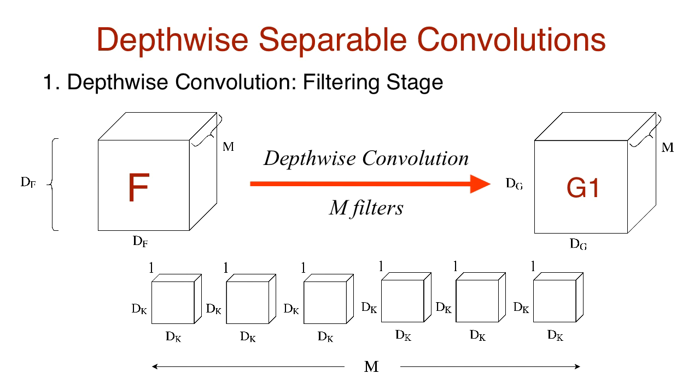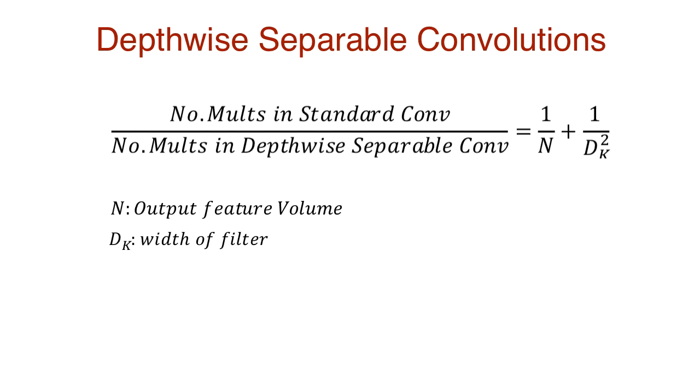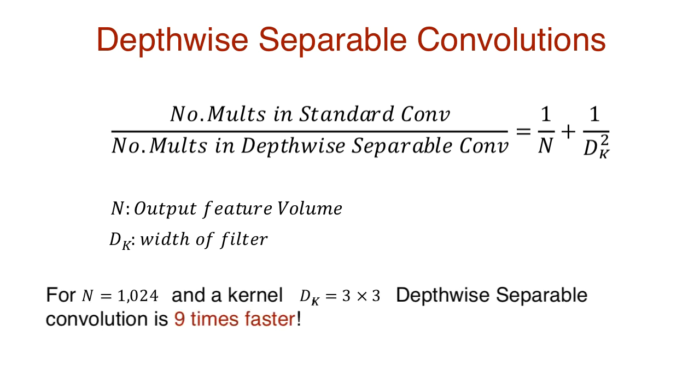Depth-wise convolution applies different filters to each individual input channel, very different from standard convolution which applies the convolution through all channels. Then we have point-wise convolution which is a 1x1 convolution to create a linear combination of outputs of depth-wise convolution. The ratio of multiplication operations between standard convolution and this two-step depth-wise separable convolution becomes significant for larger networks. For more details on this derivation on screen and useful places where this is used, check out my video on depth-wise separable convolution.